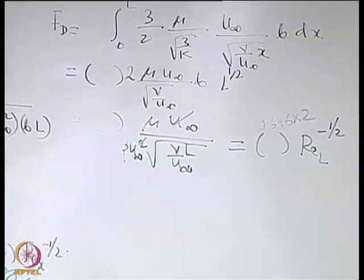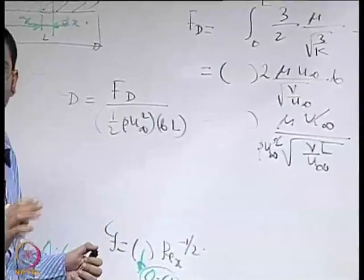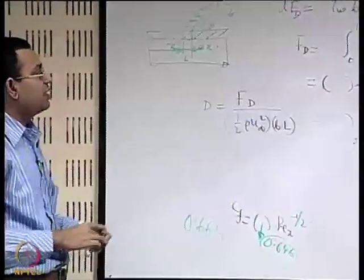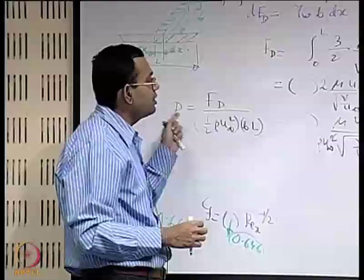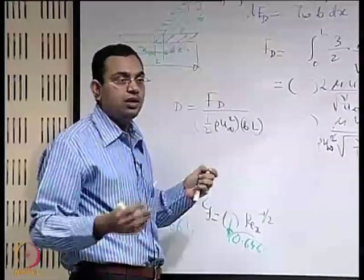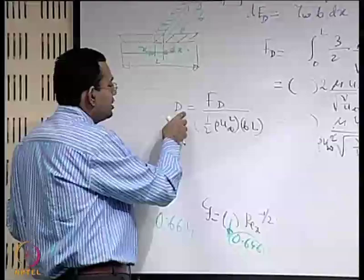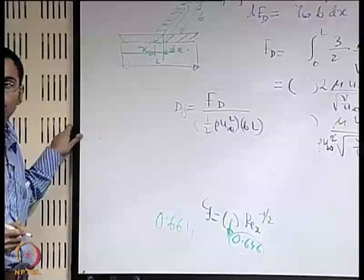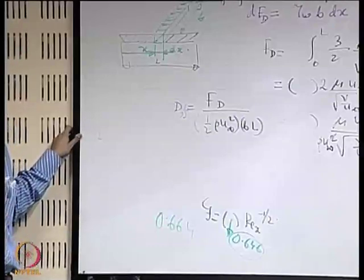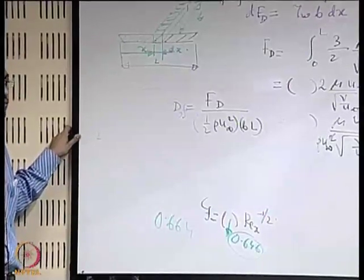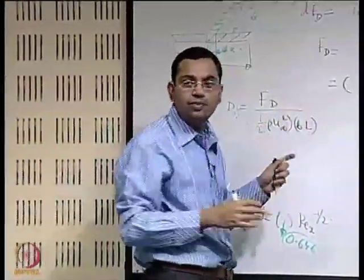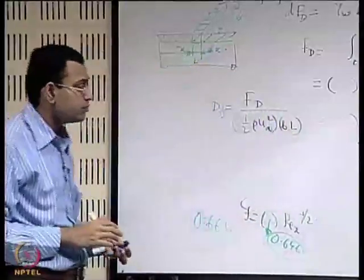To summarize this exercise: by using an approximate velocity profile, we estimated how boundary layer thickness grows with x, calculated the wall shear stress, and calculated the total drag force and their non-dimensional versions. Because this originates from a skin friction force, the coefficient is sometimes given the subscript CDF — F for skin friction — since there will be other mechanisms of drag force, not just wall shear stress.